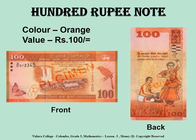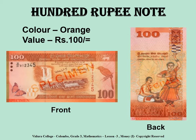Children, can you guess what this note is? It is the 100 rupee note. As you can see, the color of the 100 rupee note is orange and the value is 100 rupees. On the front side of the note in the center, you will see the Norachole coal power plant project. And above that picture, you will see the Lakshapana waterfall with the cables that transmit the hydropower generated by the waterfall. The bird that appears on the right hand side of the note is known as the Sri Lankan Orange-billed Babbler. The butterfly that appears on the left side of the note is known as the Autumn Leaf.